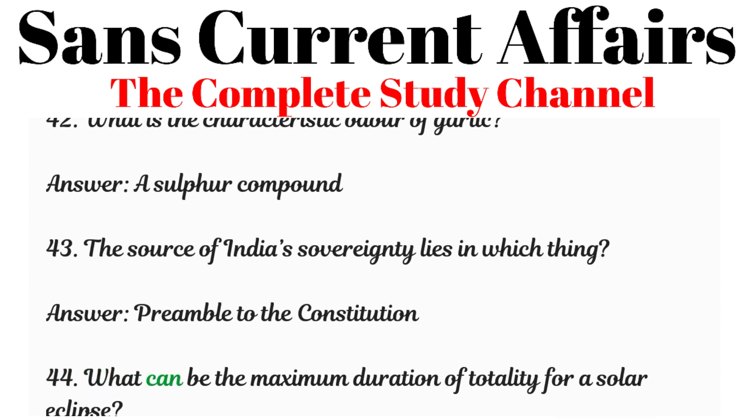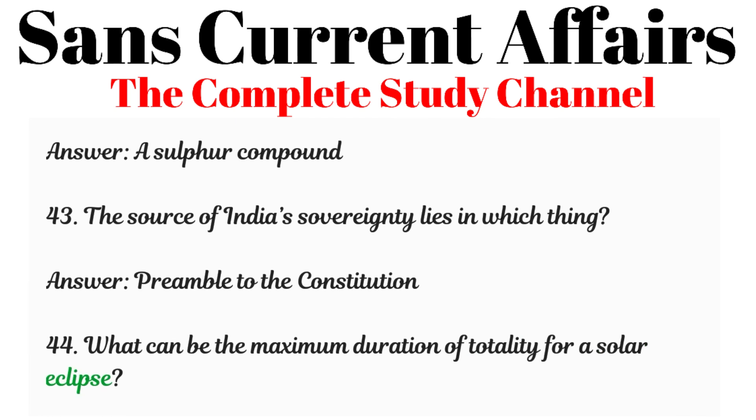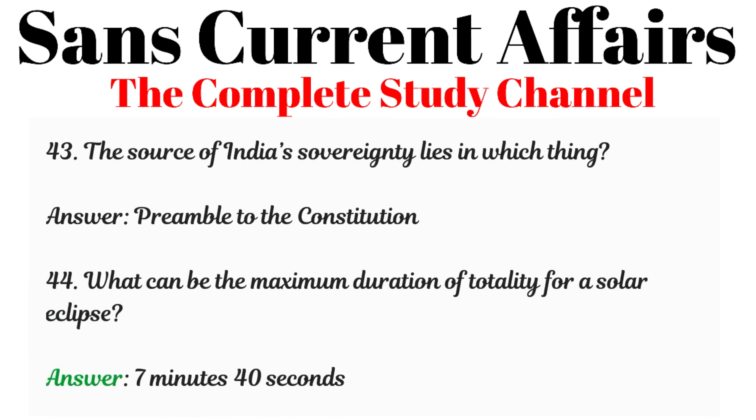Question 44: What can be the maximum duration of totality for a solar eclipse? Answer: 7 minutes 40 seconds.